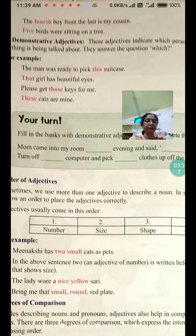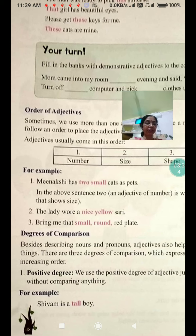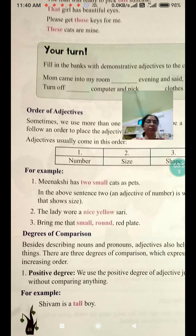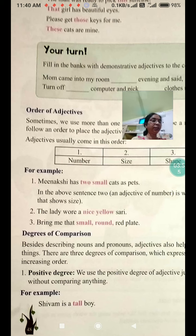Now, degrees of comparison. Besides describing nouns and pronouns, adjectives also help in comparing people, places or things. There are three degrees of comparison which express the intensity of adjectives in increasing order: number one is positive degree, number two is comparative degree, and number three is superlative degree.